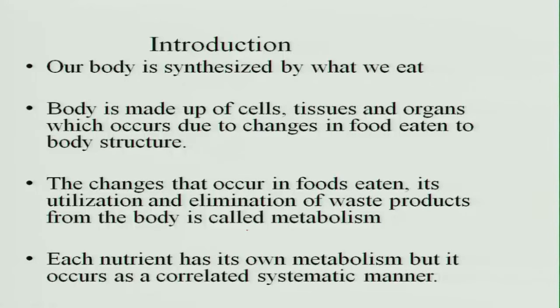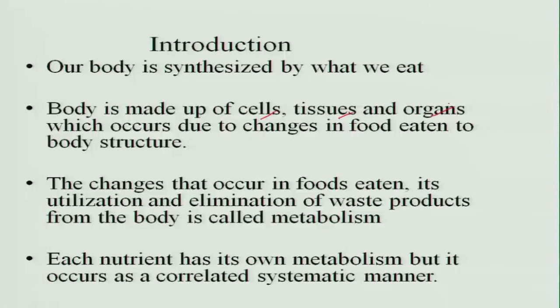We are what we eat — our body is synthesized mainly by what we eat. The body is made up of cells, tissues, and organs which occur due to changes in the food eaten. The changes that occur in food — the utilization and elimination of waste products from the body — is called metabolism. Each nutrient has its own metabolism and this occurs in a correlated, systematic manner.